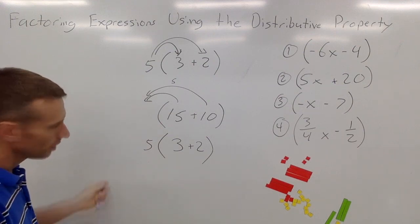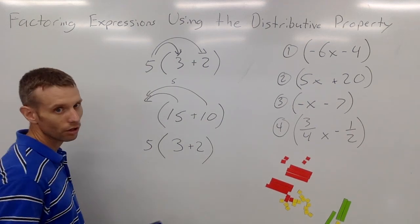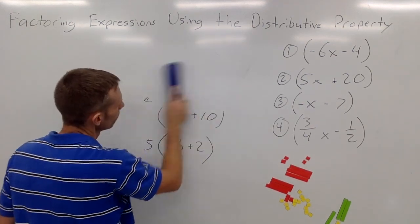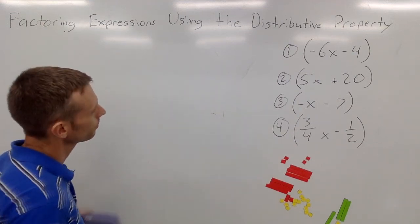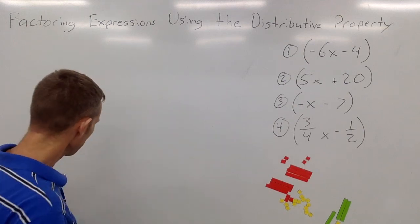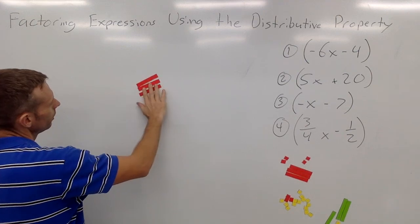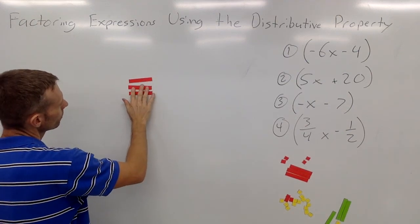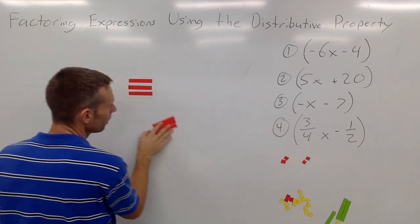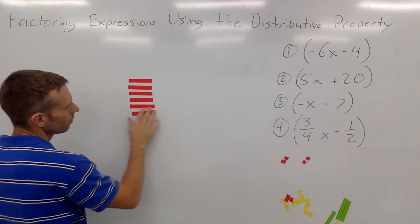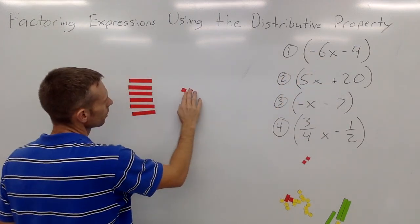Obviously this isn't as useful when using all numbers usually, although there are probably a few cases where that might help you do some mental math. Now we're going to deal with variables and terms that aren't just only constants. So I have negative 6x minus 4.